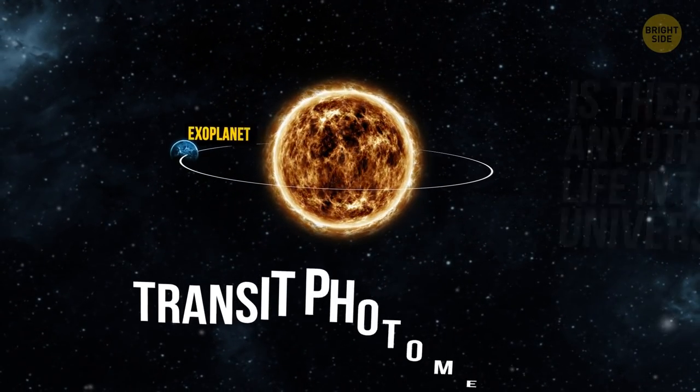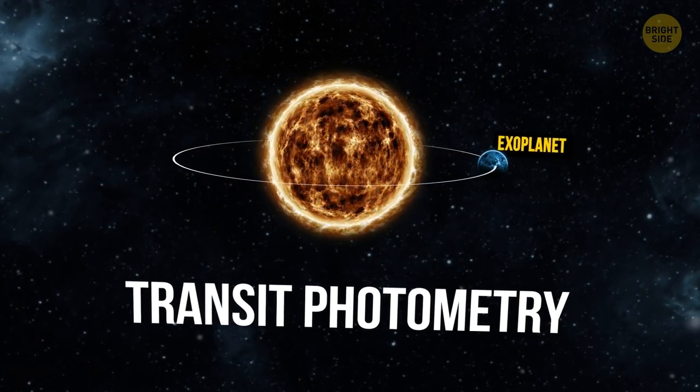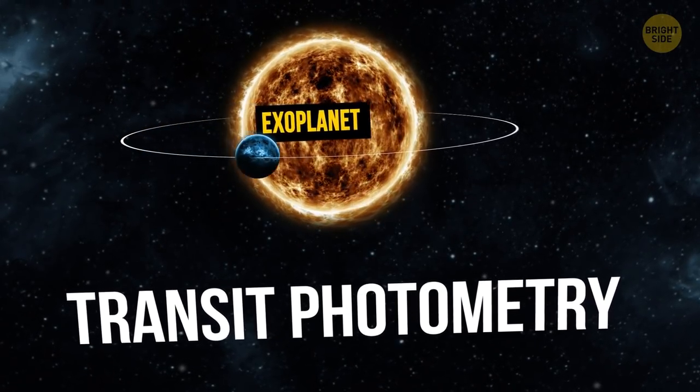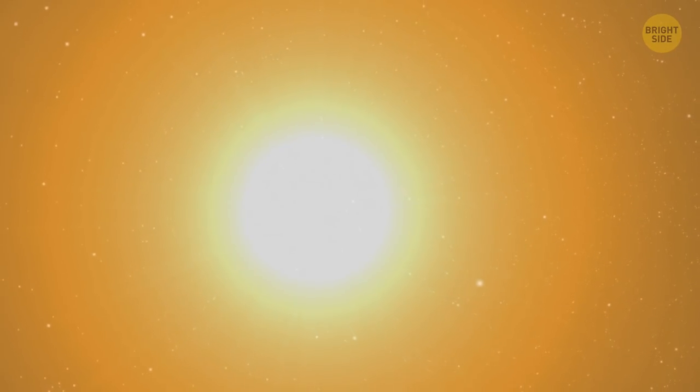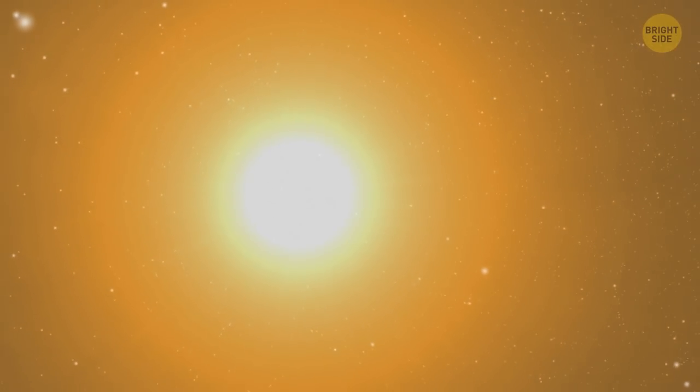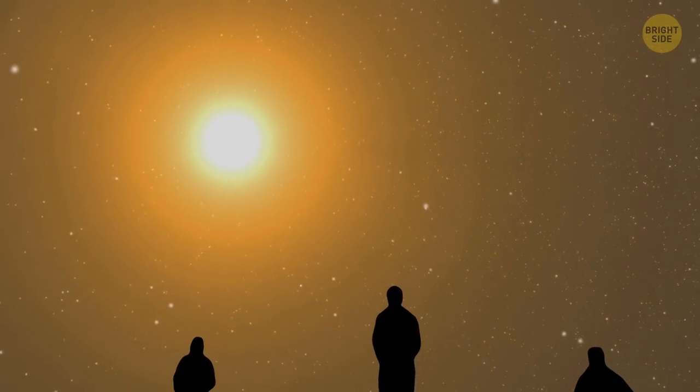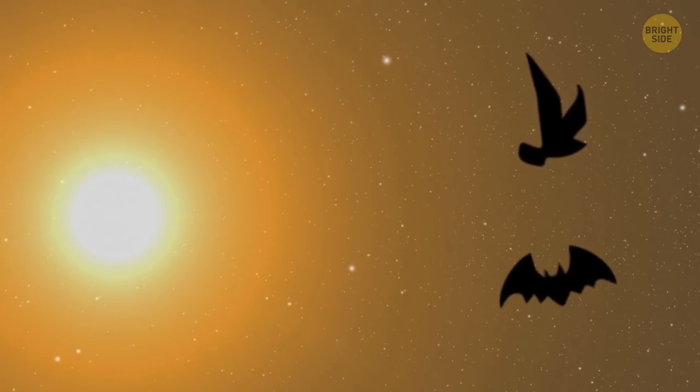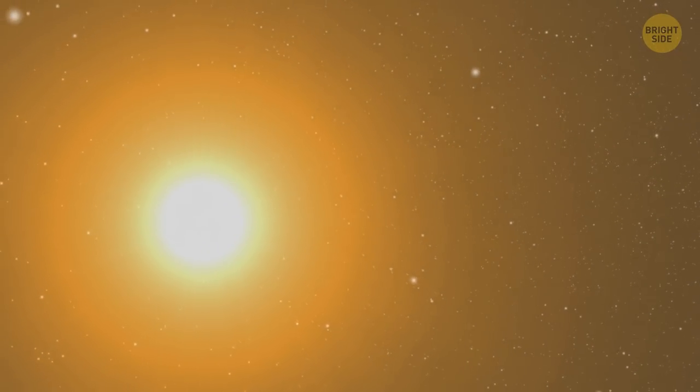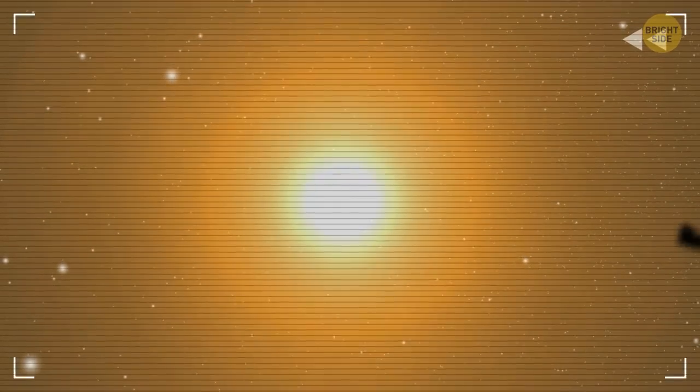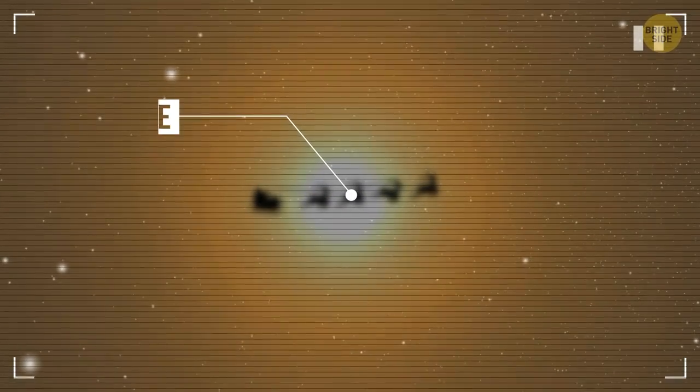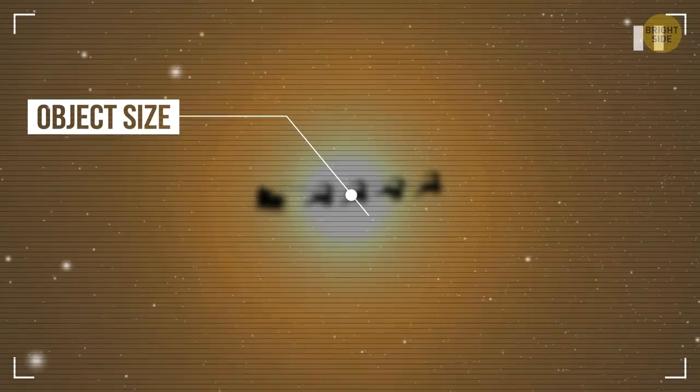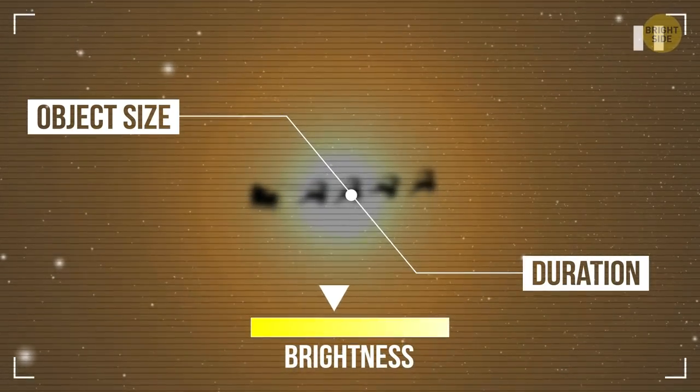This method is called transit photometry. Don't mind the big name. To simplify it to its core, this method can be explained with a trivial example. Imagine you're looking at some distant light, and then something flies right in front of it. The light is too bright, and the object is too far and fast for you to even guess if it was a bird or a bat. But you can tell for sure that something was there a second before. That's because the light itself dimmed and flickered for a moment. You can even figure out how big that object that passed by was by how long and strong the observed dimming was.